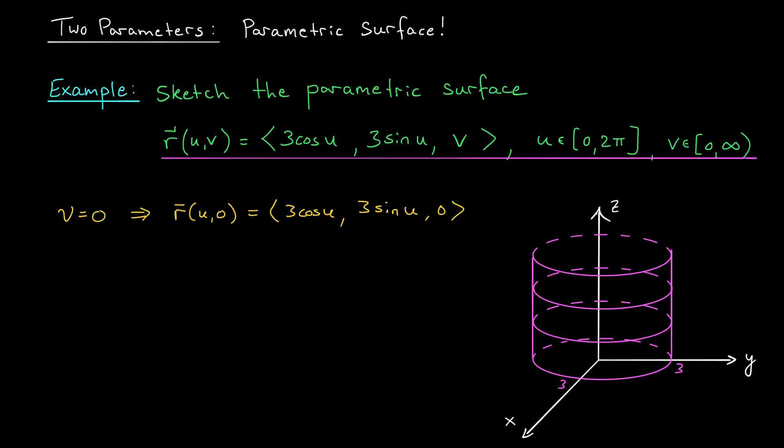We would have arrived at the same curve if we had decided to set U equal to a constant. If U were constant, then X would be 3 cos U and Y would be 3 sine U. That's some point along this circle of radius 3. Maybe it's this point here. If we then let V range over all possible values, we get a vertical line extending from the XY plane. And if you do this at all points, sure enough, you still get a cylinder.